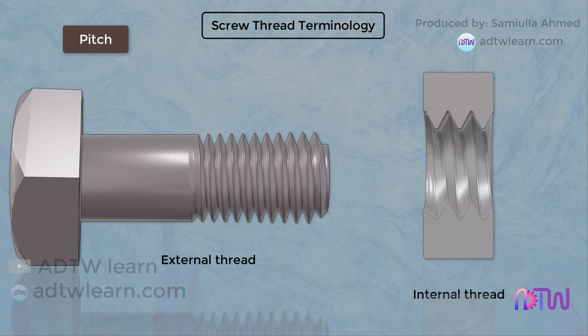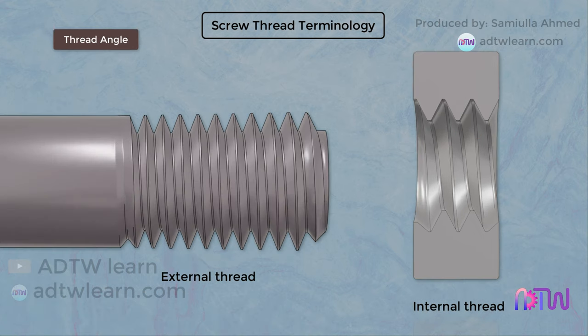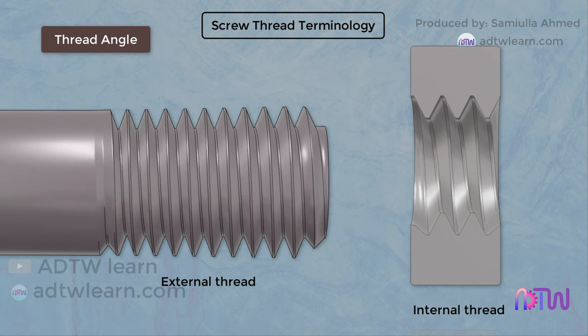Pitch: the pitch is the distance between two identical threads. Thread Angle: the thread angle of a screw is the included angle between the thread flanks.